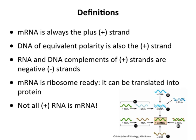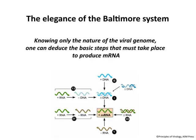The Baltimore scheme is really elegant because if I give you any one of the seven genome configurations, you can put mRNA in the middle and remember a few rules — like only double-stranded DNA can be made into mRNA, and double-stranded RNA can't be translated — and you'll be able to sort out all of these pathways. This is a great scheme for figuring out how viruses replicate.